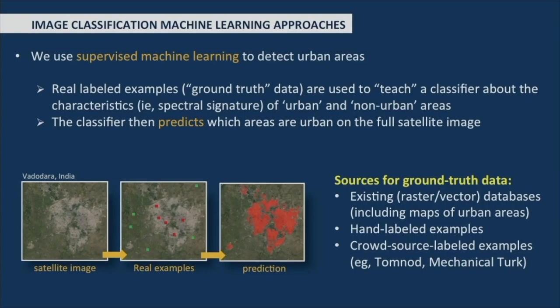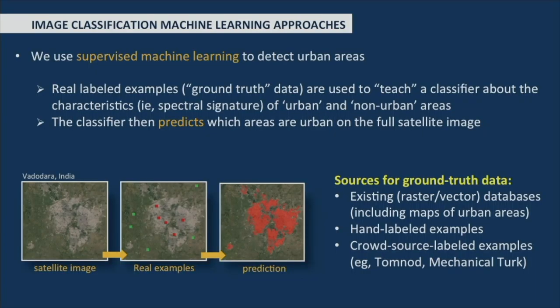This heterogeneous land cover is very important when evaluating classifiers, because you want to know whether the classifier can be applied on different types of land cover — you want to evaluate its generalization. We applied supervised machine learning: the idea is to use real labeled examples as ground truth to learn the characteristics of what you want to detect, train a classifier, and apply it on new examples. For urban research, ground truth data includes existing raster and vector databases such as WorldPop, and hand-labeled examples including those labeled via crowdsource platforms like OpenStreetMap.